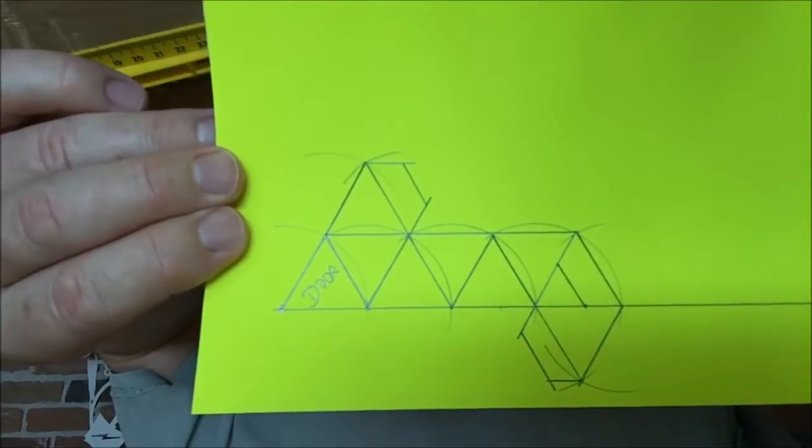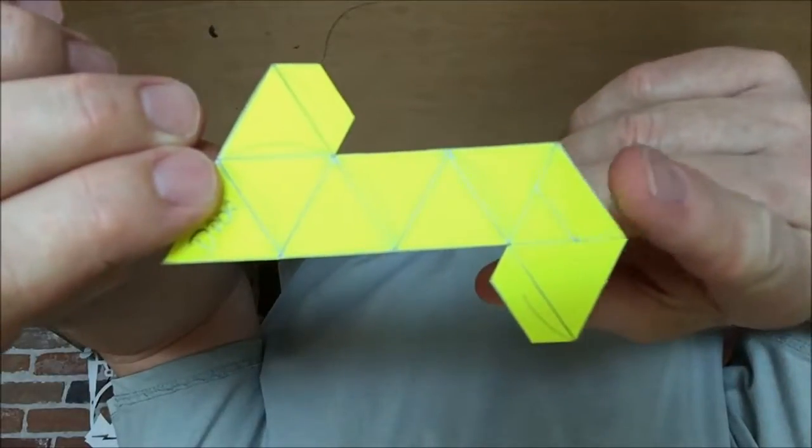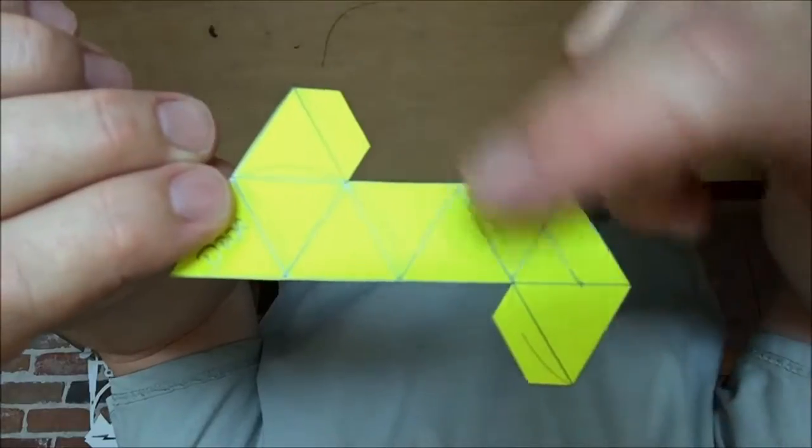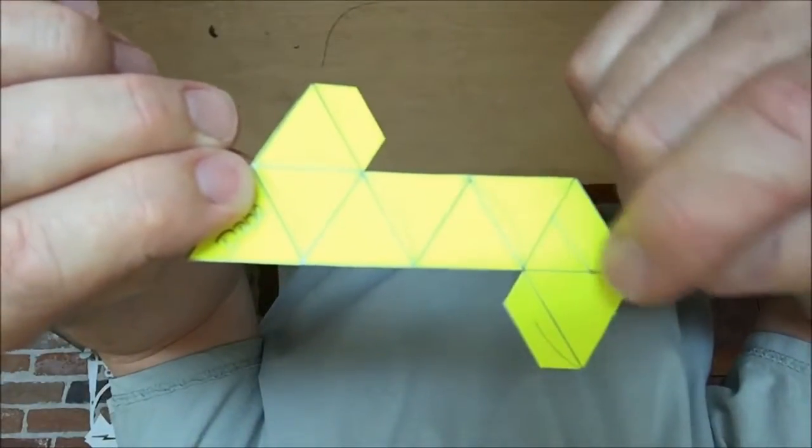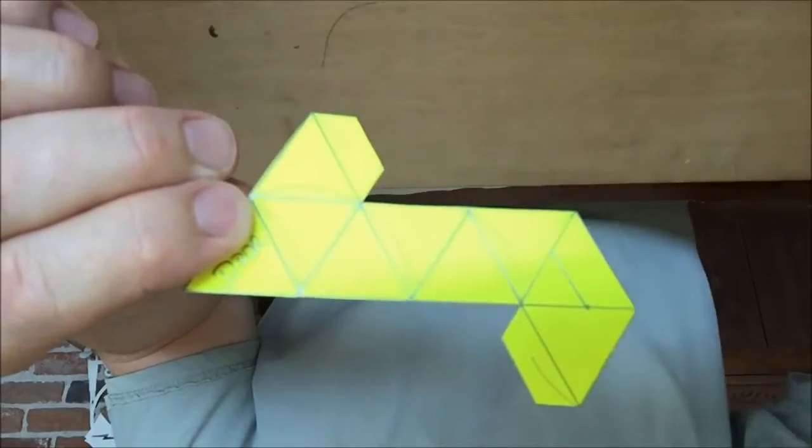Next, cut it out. After you cut it out, make sure you score all the marked segments except the door slot, and then fold it.